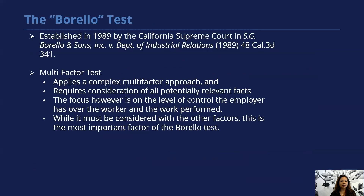This test applies a complex multifactorial approach. It requires consideration of all potentially relevant factors, but focuses on the level of control the employer has over the work and the work performed. You probably noticed that this is also an overriding factor with the ABC test and the business-to-business exemption. Put another way, whether the potential employer has control over the manner and means of accomplishing the result desired. While the right of control must be considered with the other factors, it is essentially considered the most important factor of the Borrello test.